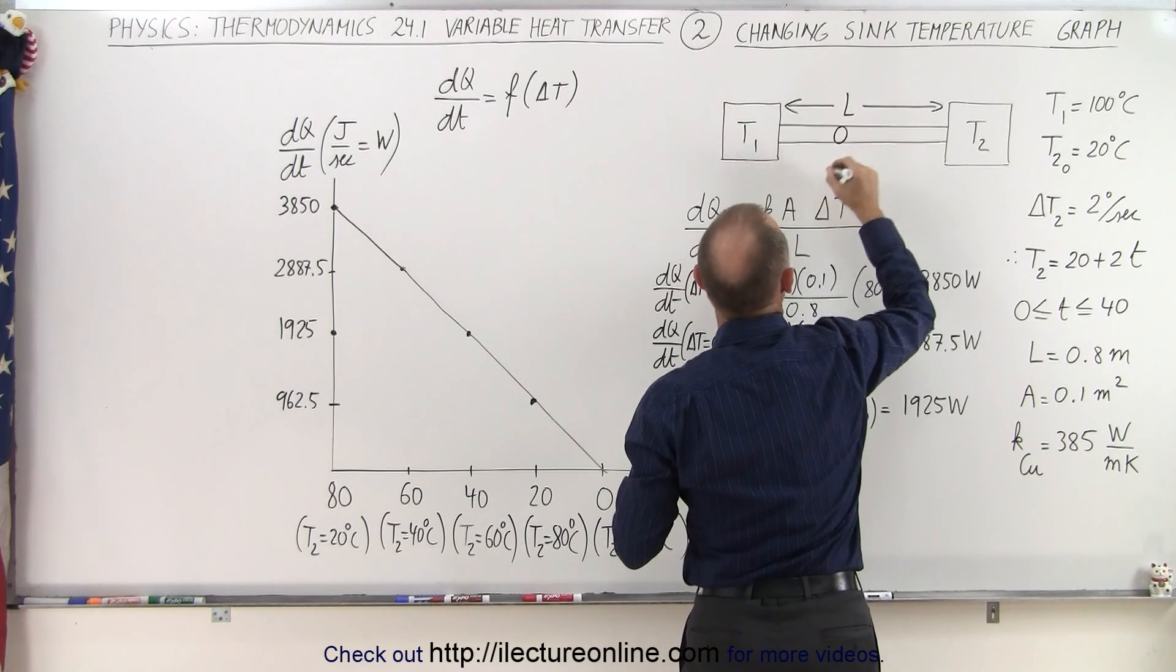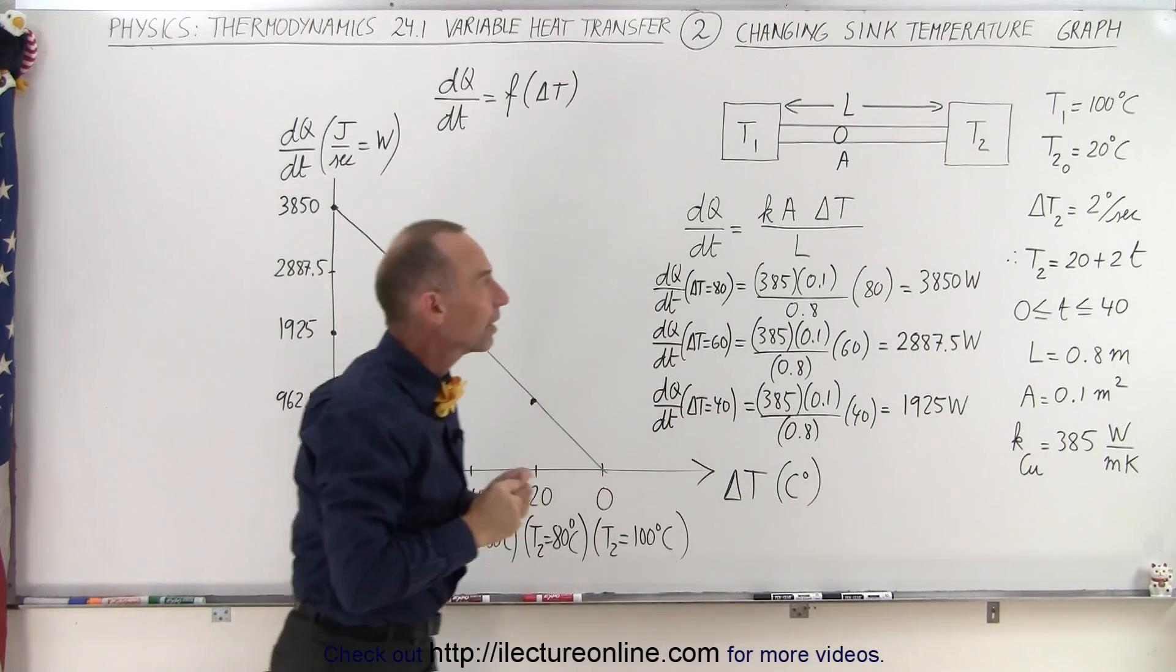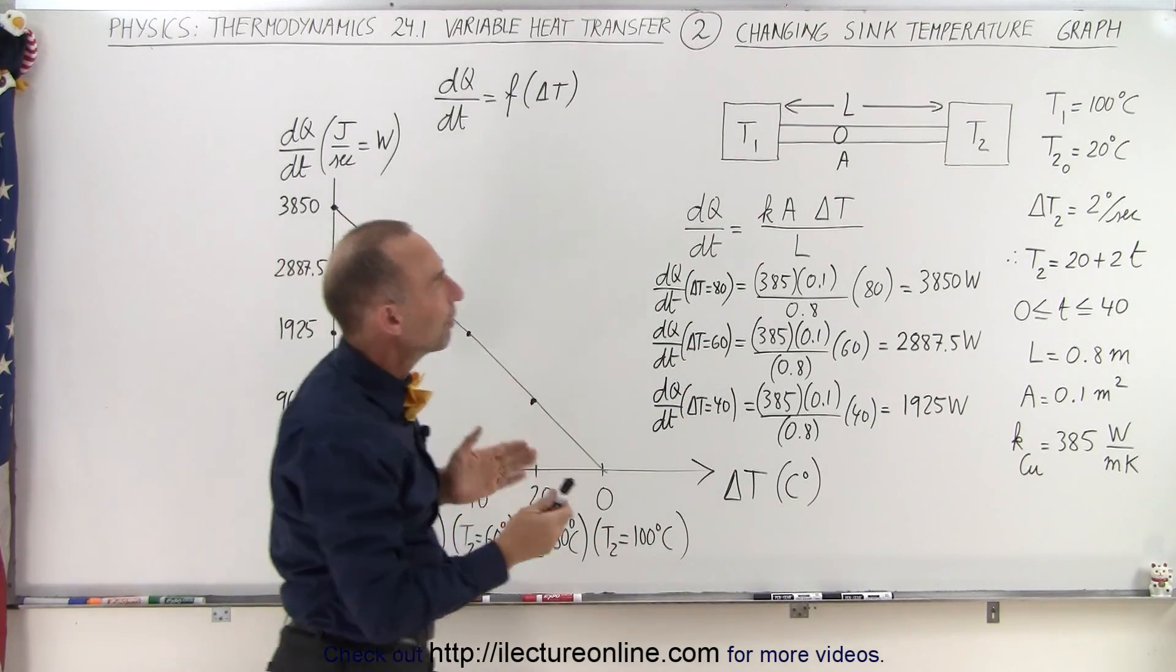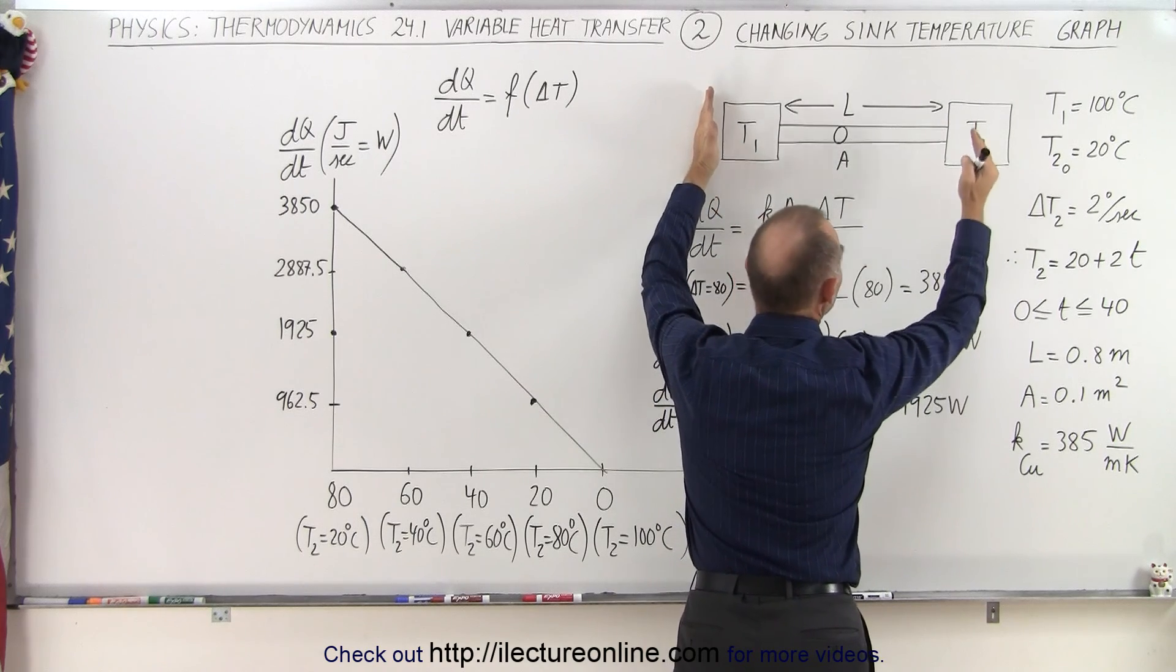And A is, of course, the cross-sectional area. And K is the conductivity coefficient. And the difference in the temperature is simply the difference between the source and the sink.